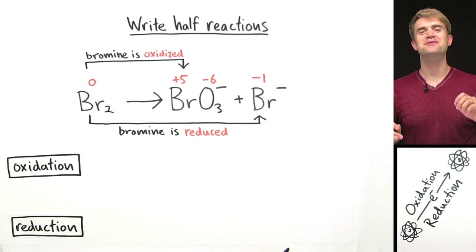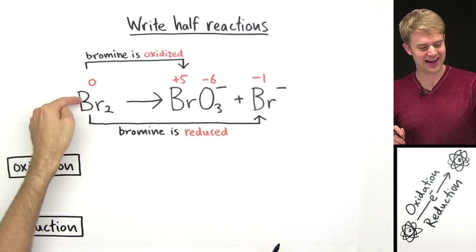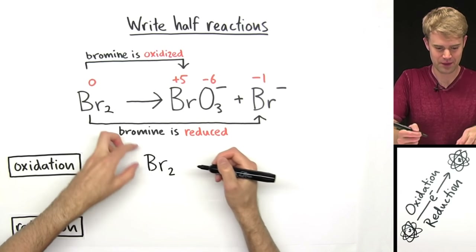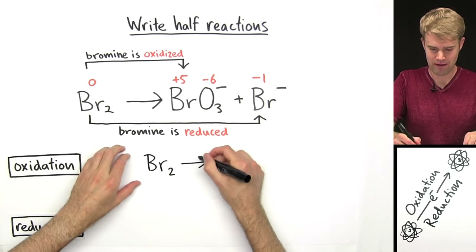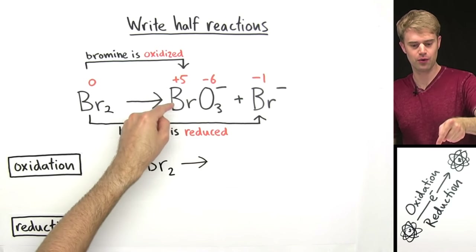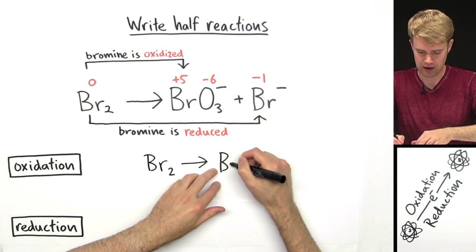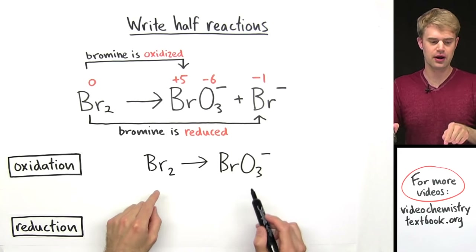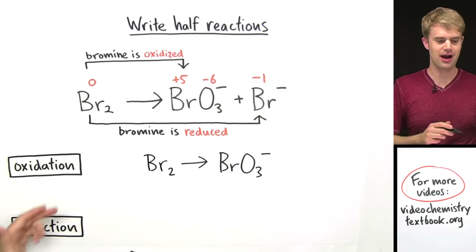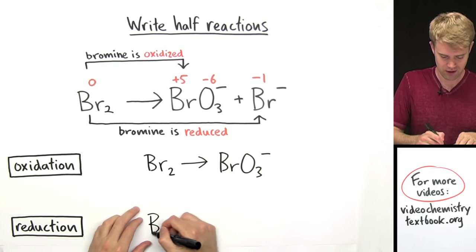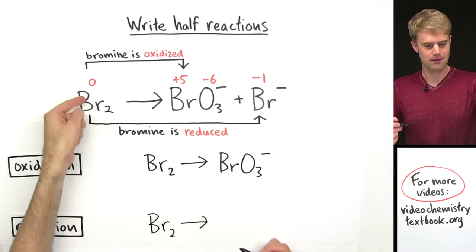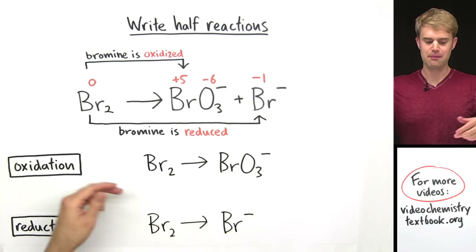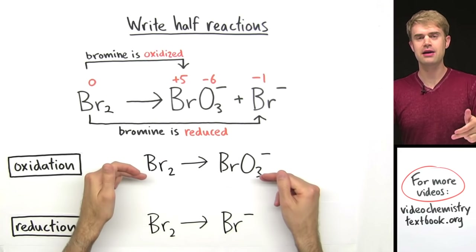For writing half reactions and balancing the equations, it's going to be a little different, but if you follow the rules we've done before it should still make sense. First, the half reaction for oxidation: we start out with Br₂, then over here is the compound where bromine is getting oxidized, so we're going to have BrO₃⁻. This is the oxidation half reaction. For the reduction half reaction, we start out with Br₂, and that becomes Br⁻.